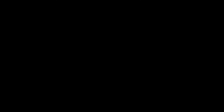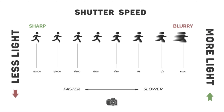The exposure triangle is the foundation of photography. It consists of three key components: ISO, aperture, and shutter speed. Together they control the exposure of your photo, determining how light or dark your image will be. So let's break down each component, starting with shutter speed.